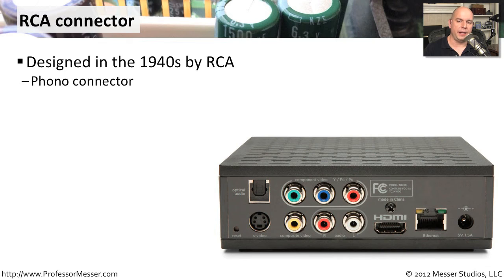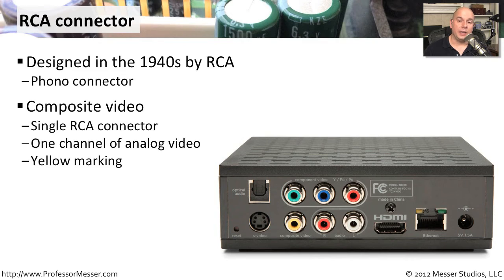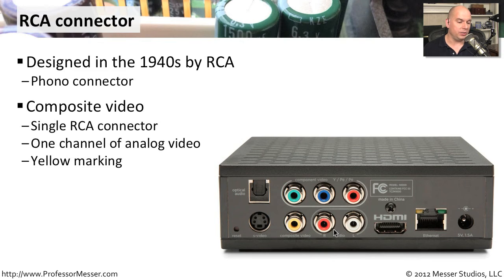We see RCA connectors used for both audio and video — it's a connector type that's been around since the 1940s, sometimes referred to as a phono connector. An RCA connector is very commonly used for composite video, which uses a single link, usually colored bright yellow. It's often used in conjunction with audio, so you may also be running left and right red and white audio signals along with the yellow video signal.